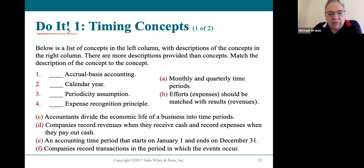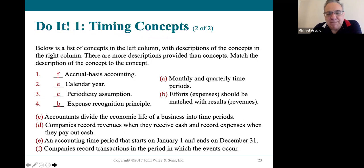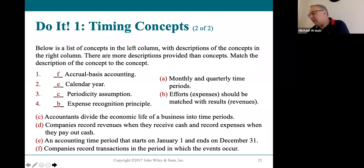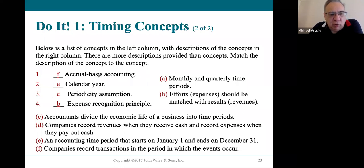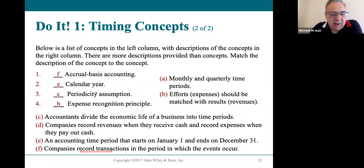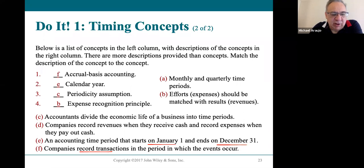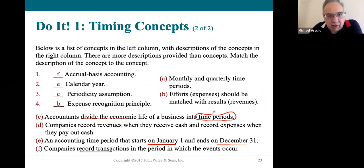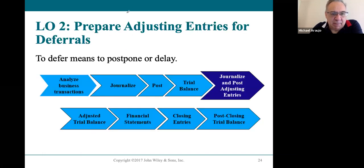Here we're at the Do It review exercise on page 156, which gives definitions of key terms. Accrual basis accounting means recording transactions in the ledger when they occur. A calendar year is an accounting period that follows January 1st through December 31st. The periodicity assumption is the division of economic life into time periods — the shortest being a month, the longest a year. The expense recognition principle means expenses are matched with revenues in the same period of time.